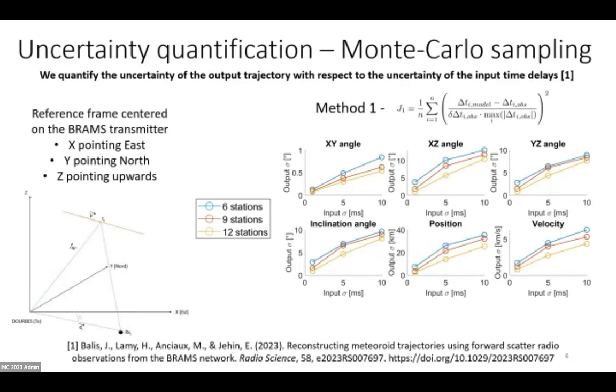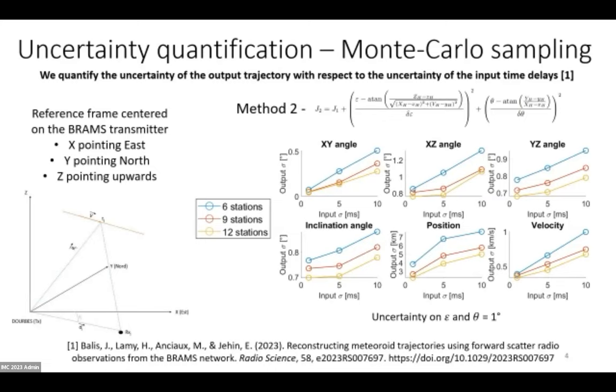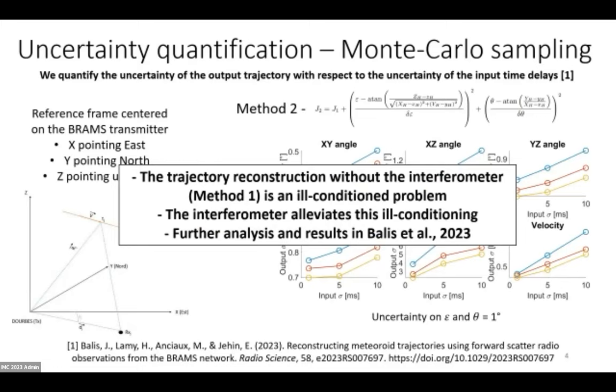What we see is that if we complement the time delays with interferometric data—this is what we call method two—in that case, if we look at the same subplot, we've basically won an order of magnitude because now having five milliseconds of uncertainty leads to less than one degree uncertainty on the inclination angle. To summarize, the takeaway message is that retrieving trajectories with the forward scatter system and with time delays only is very difficult because it's intrinsically an ill-conditioned problem, but adding interferometric data completely alleviates this problem.